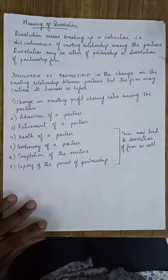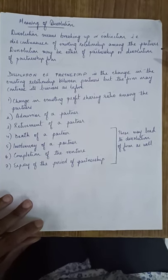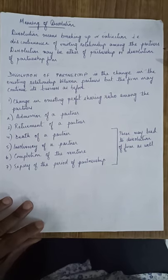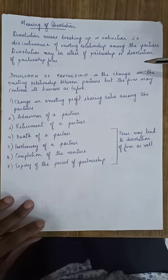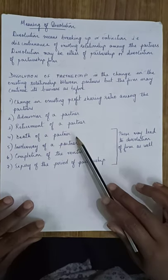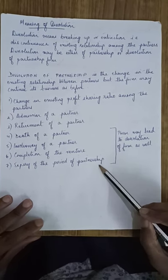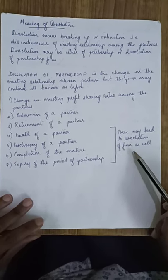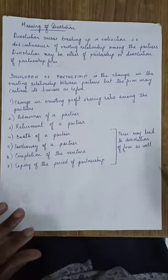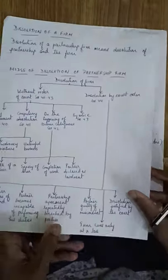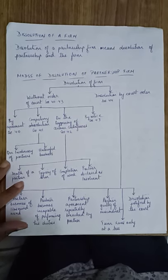The examples of dissolution of partnership done earlier were: change in existing profit sharing ratio among the partners, admission of a partner, retirement of a partner, death, insolvency, completion of a venture, and expiry of the period of partnership for which it was formed. Note that death of a partner, insolvency, completion of a venture, and expiry of the period can also come under dissolution of firm, which is different from dissolution of partnership.